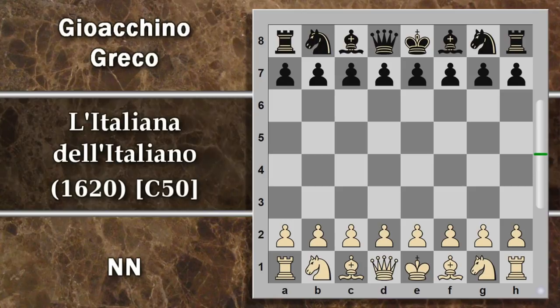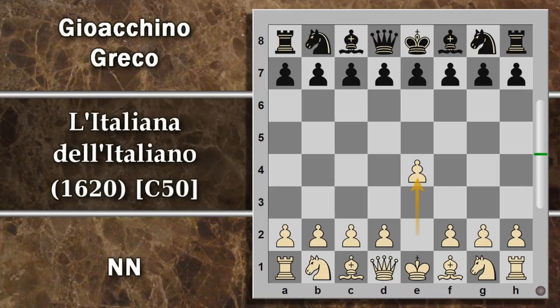In questa partita Gioachino Greco gioca con il nero, e un giocatore senza nome gioca con il bianco. Greco aveva registrato molte partite ma a quel tempo non era importante il nome dell'avversario, anche perché lui era probabilmente il giocatore più bravo del mondo e fondamentalmente tutti gli altri che poteva incontrare erano degli spingilegno. Quindi, un po' altezzosamente, nei suoi libri non riportava il nome dell'avversario, forse anche per evitare umiliazioni non volute.